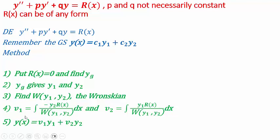So far, we had studied second order linear differential equations of the type y'' + py' + qy = r(x), where p and q were constants and the right-hand side was either 0, or of the form e^(ax), sin(x), cos(x), or a polynomial. Now, today we are going to look at what if p and q are not necessarily constant and there is no restriction on r(x) — then how do we solve?